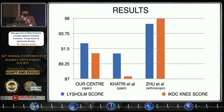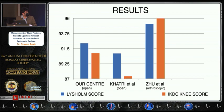These are the results from our center versus what we found in the literature. The Lysholm score is shown in blue and the IKDC score in orange. Both our center and the different studies reviewed showed very similar results — around 90 percent for both scoring systems.